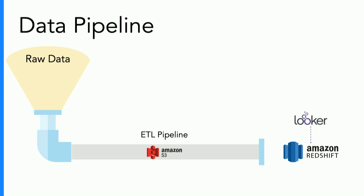Now that we have all that data, we store it in S3, it goes through our ETL pipeline managed by our data engineers using Luigi and Spark to clean up column names and connect it to other datasets. Then it gets loaded into Redshift, and ultimately we plug Looker into our Redshift instance.